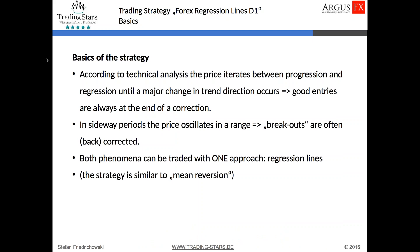In general, if you follow technical analysis, you know that the price normally iterates between progression and regression — the two parts of what builds a trend. This always iterates until a major change in trend direction occurs, and of course the best entries are at the end of a correction. Another behavior you can find in price is that it oscillates in a certain range. Sometimes you realize breakouts, but often they are simply back-corrected so the price goes back into the original range. The good thing is we can trade both ideas in one approach.